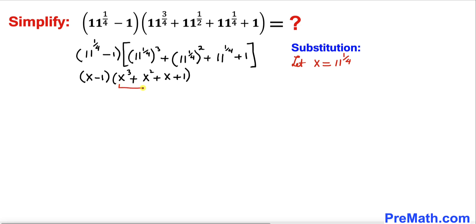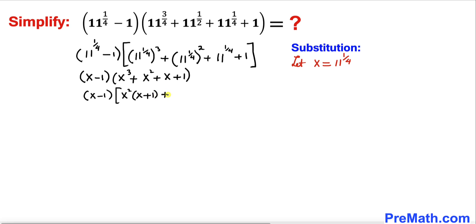We can see that x squared is common between the first two terms and 1 is common between the last two terms. So we factor: x squared times (x plus 1) plus 1 times (x plus 1), giving us x minus 1 times (x squared plus 1)(x plus 1).